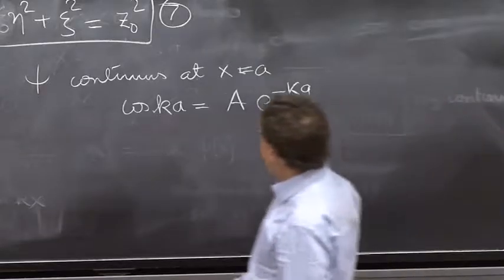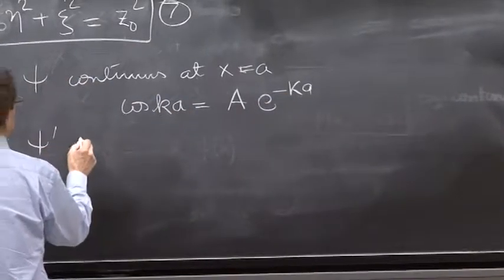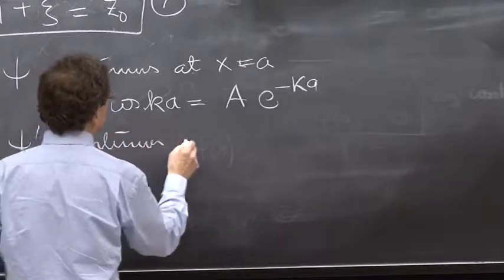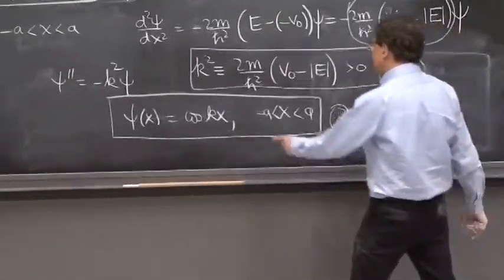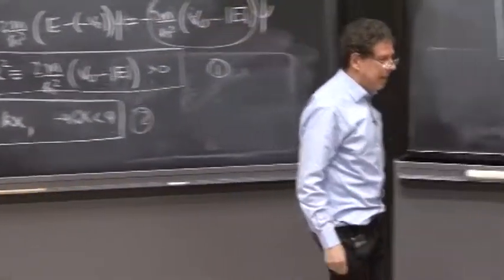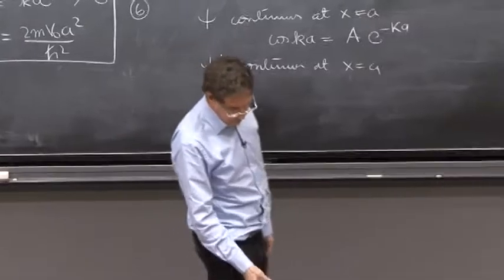ψ prime must be continuous at x equals a as well. What is the derivative of this function? It's minus k sine of kx.